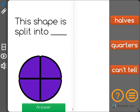The question says this shape is split into blank and our options are halves, quarters, or can't tell what it's split into.